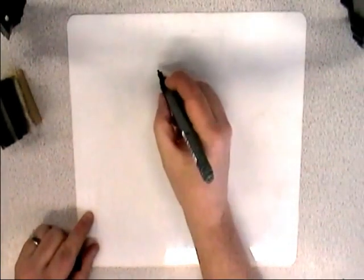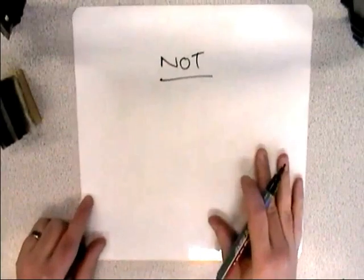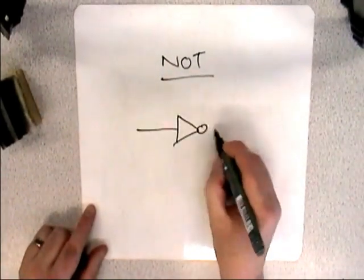So, assuming we've got the people who are just starting out, there are three logic gates you need to know about, and they are, we'll do the easiest one first, the easiest one I think is NOT. Okay? NOT.